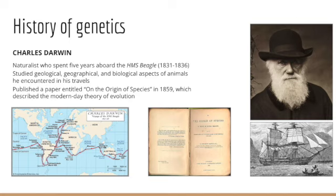It was pretty scandalous at the time. In the 1800s, the idea of evolution rather than the other concepts and ideas surrounding religion was controversial. He went on to publish a paper in 1859 entitled On the Origin of Species, which described the modern-day theory of evolution, which from a scientific perspective is certainly still accepted.